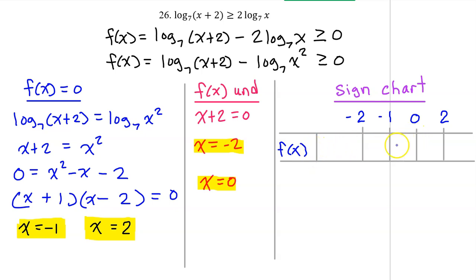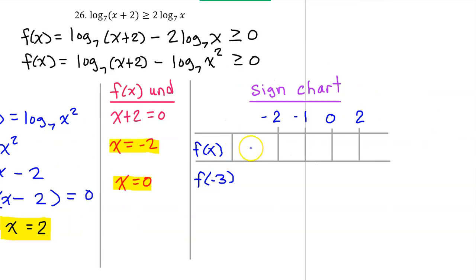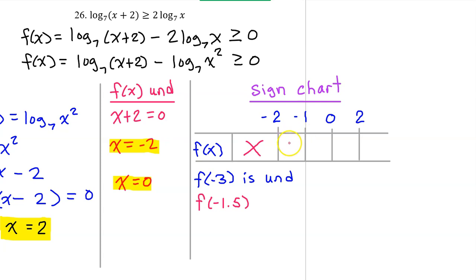Set up your sign chart with your critical values in order from least to greatest across the top. We need to determine whether f of x is positive, negative, or undefined in each interval by evaluating f of x at a test value that represents each interval. In the first interval, let's use negative 3 as a test value — but you cannot take the log of a negative number, so f of x will be undefined at negative 3. In the next interval, let's use negative 1.5 — this is still negative, so f of x is still undefined. The same thing will happen in the next interval with a test value of negative 0.5 — f of x is still undefined.